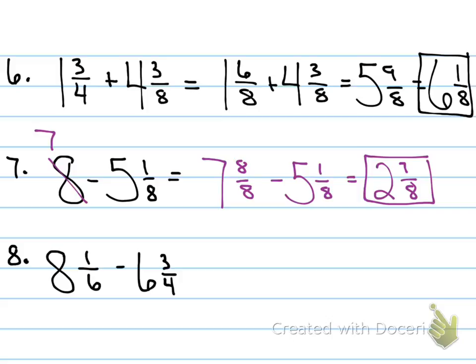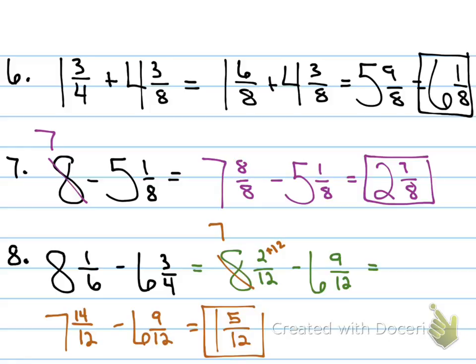Now on number 8, what's my LCD? 12. How did I get 2 over 12? How did I get that numerator? I multiply the top by the same thing as the bottom, right? Oh no, I can't do 2 minus 9. So what do I need to do? Borrow from the 8 and make it a 7. But how do I know how many to add to the 2? What tells me? The denominator tells me how many pieces are in one whole. So if I borrow a whole, I need to add 12 to the numerator. I get 14. So 7 and 14 twelves minus 6 and 9 twelves, 1 and 5 twelves.